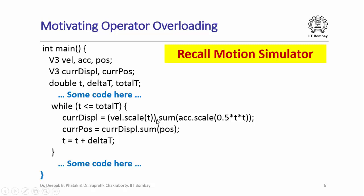Recall that we used the class V3 in a simple motion simulator program. In that simulation loop, at every time step of granularity delta t, we calculated the current displacement and current position. The expressions say: take the initial velocity as a three-dimensional vector, scale it by t, and add the scaled acceleration vector with a factor of 0.5 t squared. Similarly, add the current displacement to the initial position to get the current position, all as three-dimensional vectors.